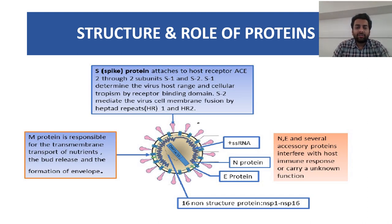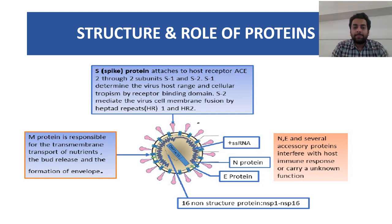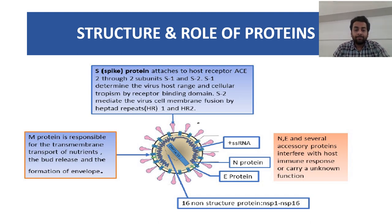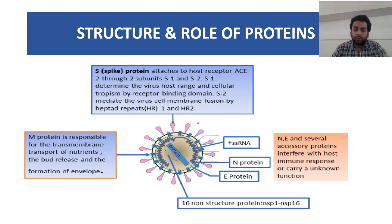What is the structure and the role of each protein in the virus? The important proteins are: the spike protein, through which it attaches to the host receptor and internalizes in the host cell; the M protein or transmembrane protein, which transports nutrients, causes bud release and formation of the envelope; the nucleocapsid protein, which protects the RNA of the virus; and the envelope protein on the outside. Inside, there is single-stranded RNA through which it multiplies in the host cell. There are also 16 non-structural proteins whose exact functions are yet to be fully understood.